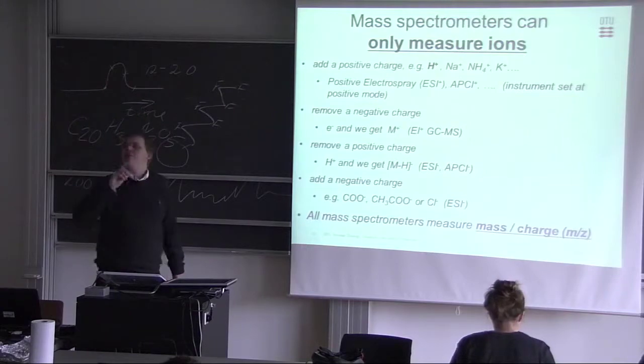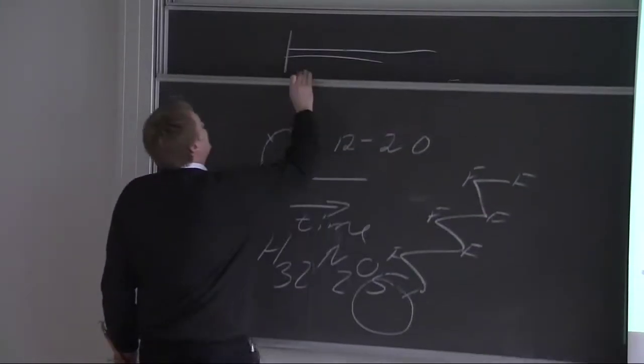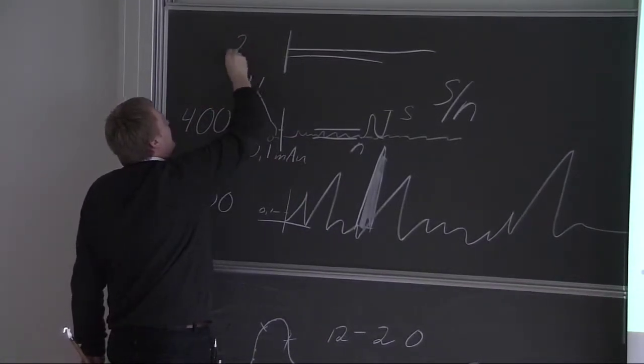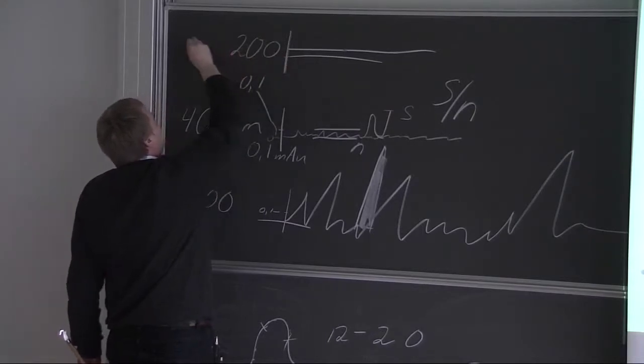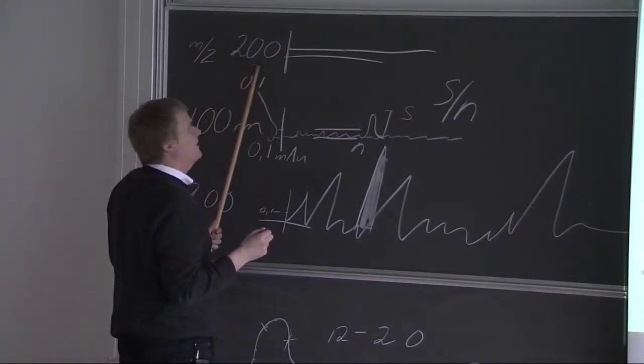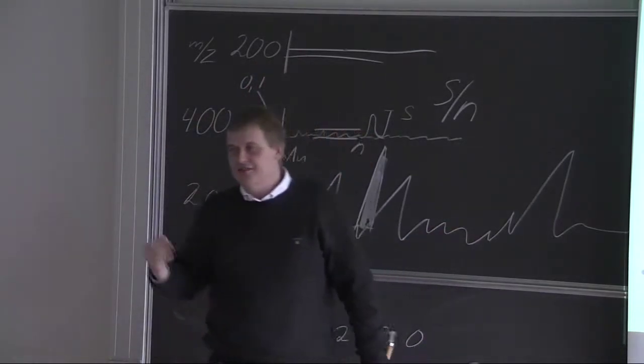But it's always M over Z. And for some strange reason, if you say that I have an ion of 200, you say M set 200. So we measured this ion. We don't put the M set after. Some historic thing. This is just how it is.